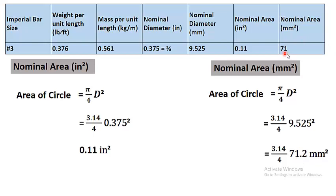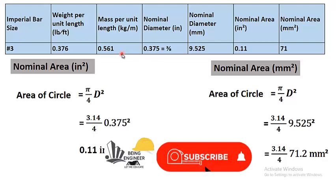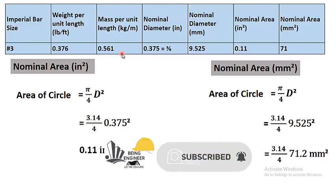As shown in the table, the area is 71 mm². In this way you can calculate the areas and unit weight of different imperial bars in different unit systems — either inches or millimeters — using these simple formulas. That's all for today. Thanks for watching, and if you are new to my channel, please subscribe and press the bell icon.